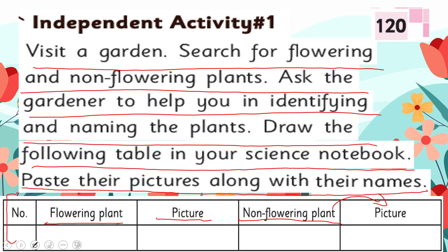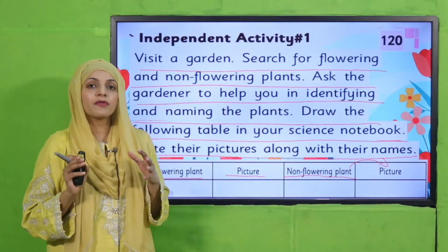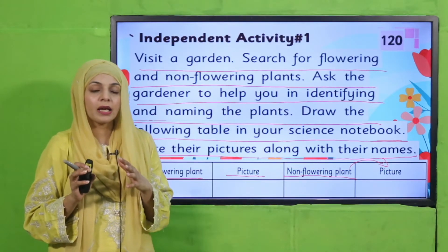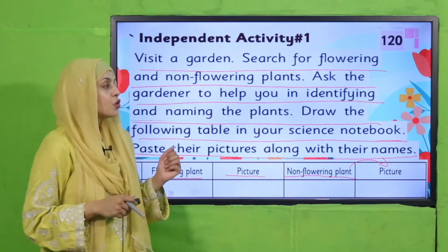Go to the garden and observe different plants there. If you don't know their names, take help from the gardener. Ask the gardener whether each plant has flowers or not. The gardener will explain in detail because he knows about all the plants. After observing, write the plant's name and paste its picture in the table.